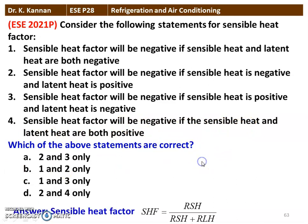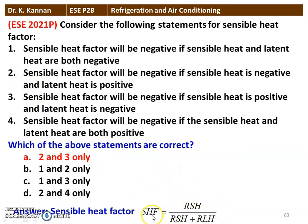Which of the above statements are correct? We define SHF = room sensible heat / (room sensible heat + room latent heat). From this definition, statements 2 and 3 are correct. If either of the two parameters is negative, the sensible heat factor will be negative — whether the sensible heat or the latent heat is negative, SHF becomes negative.